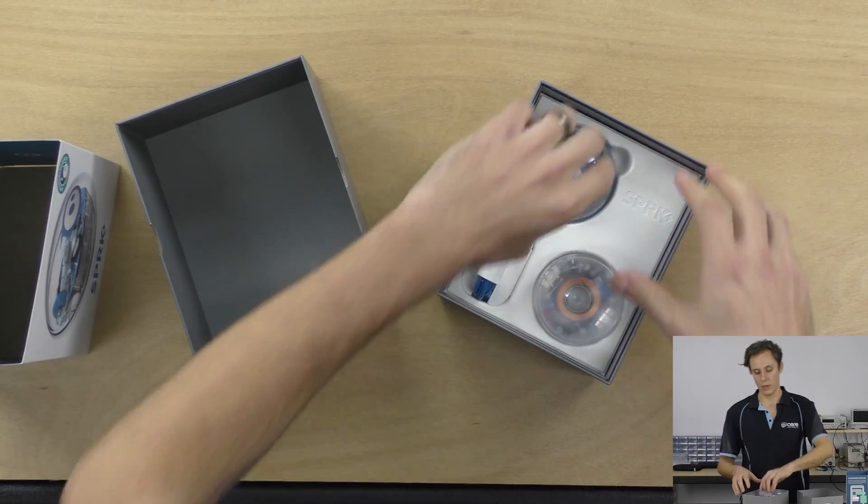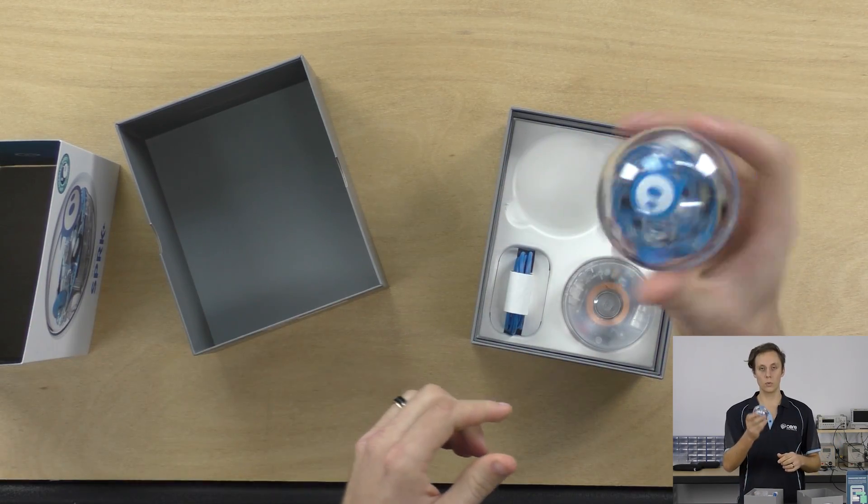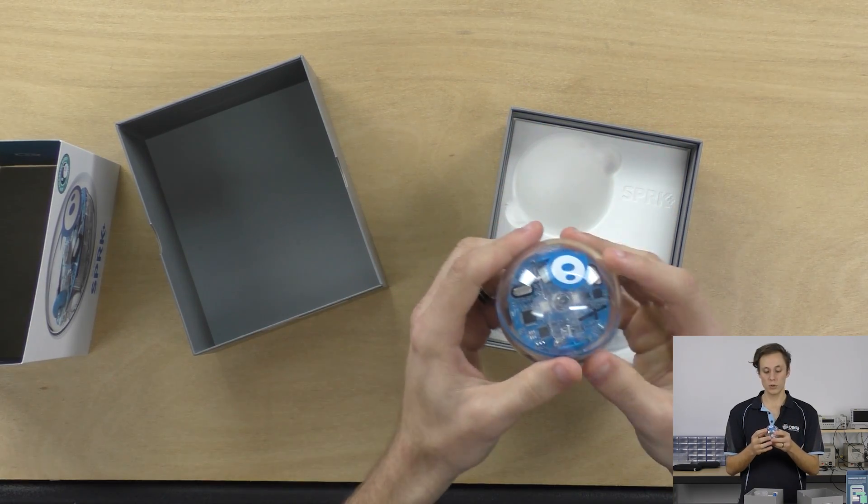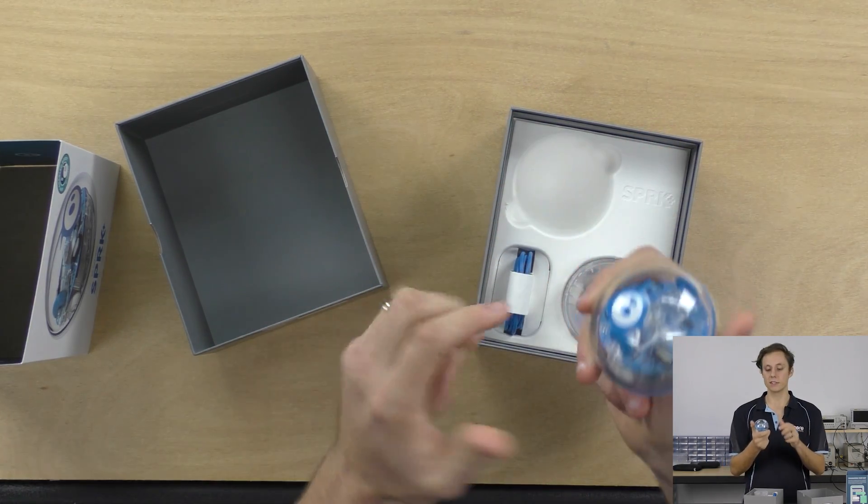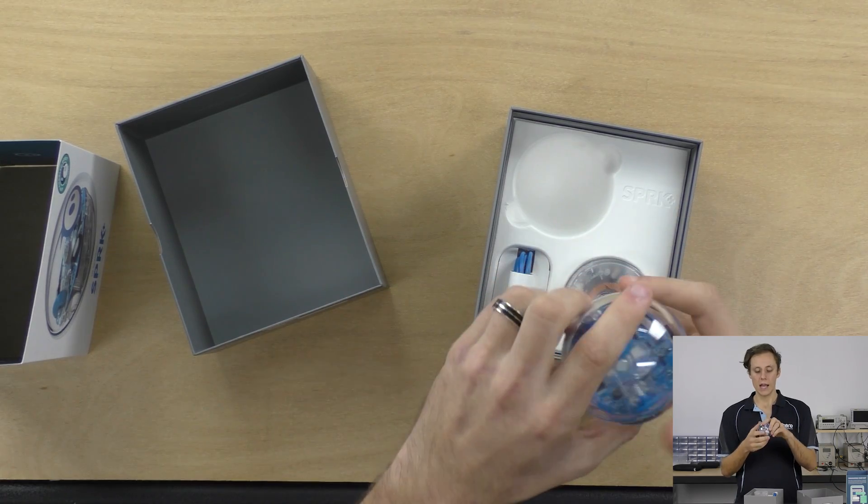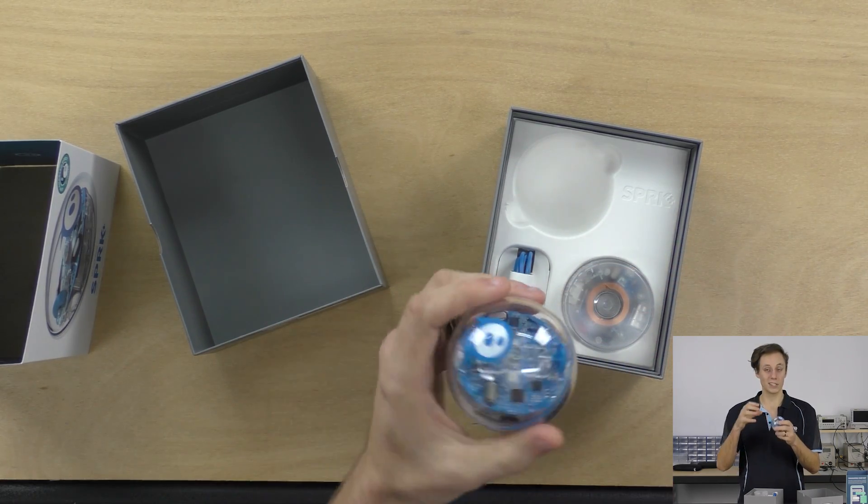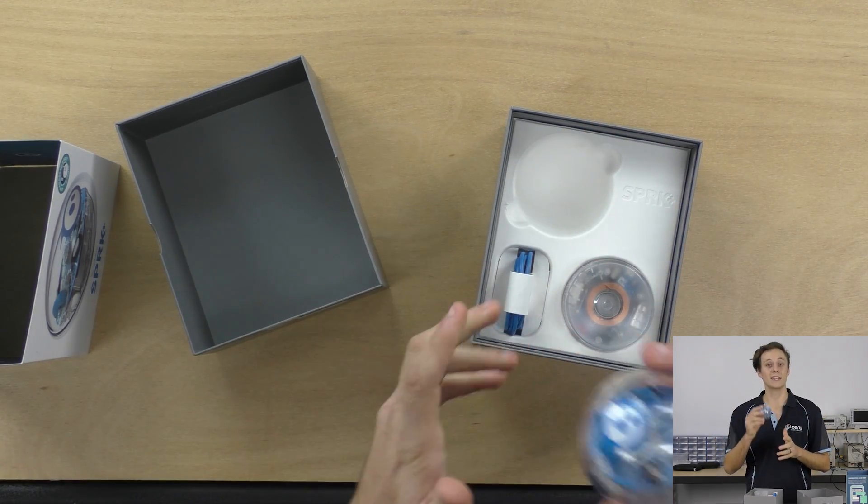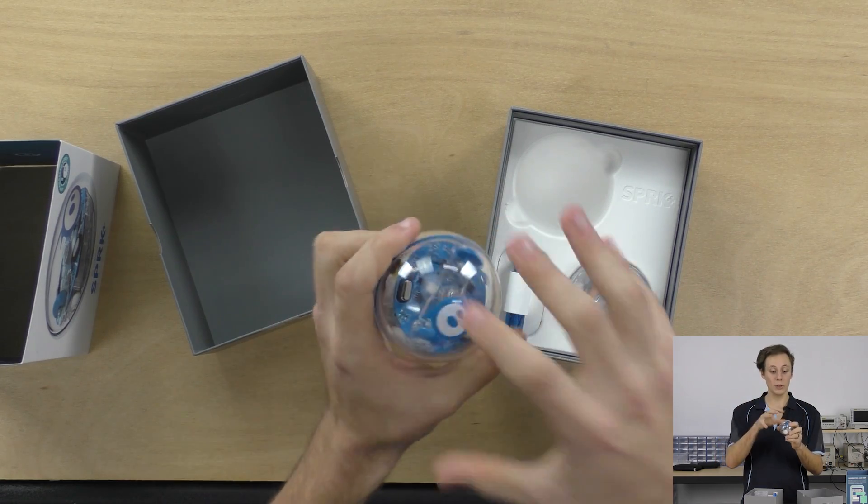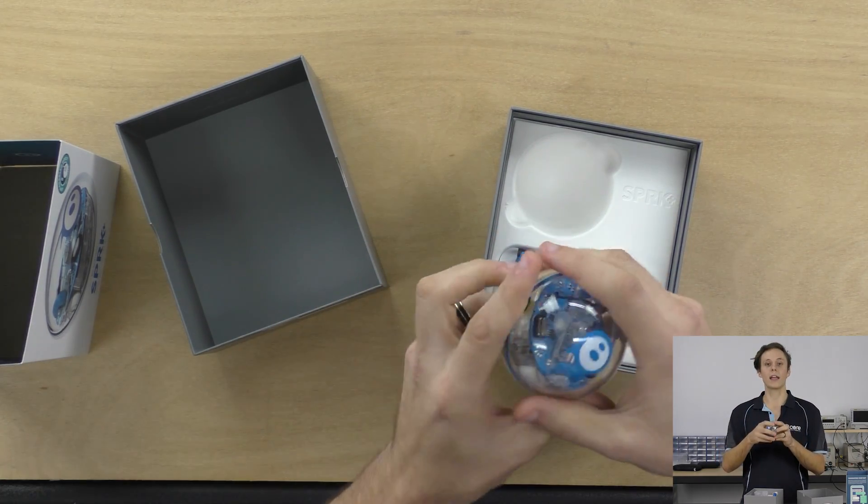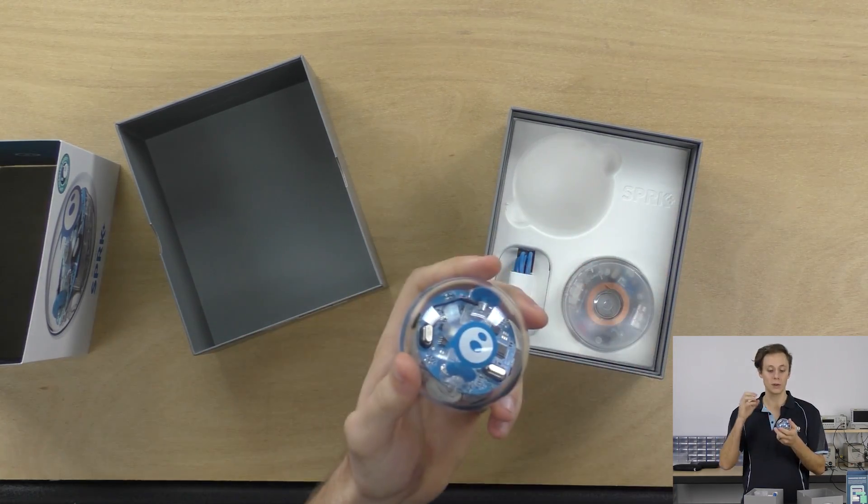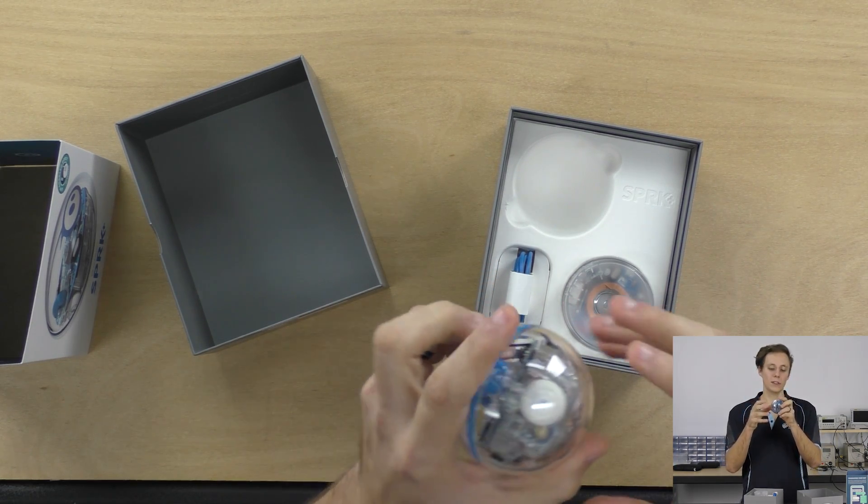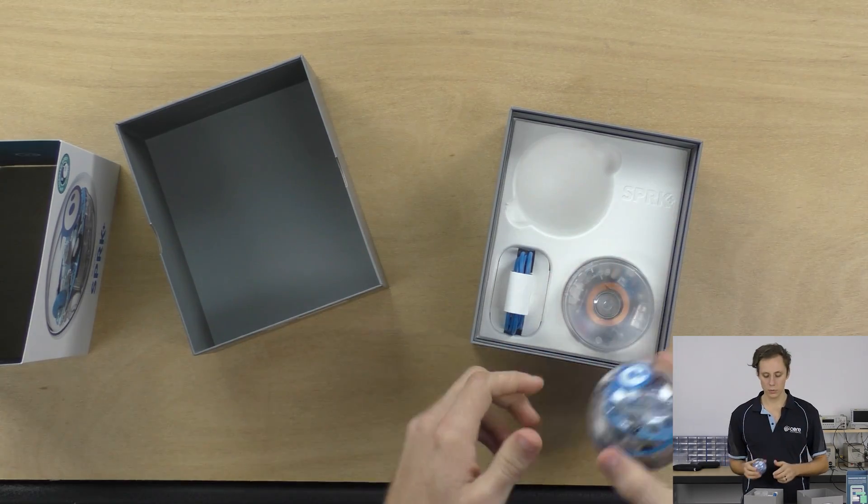Set that aside there. Then we've got the Sphero itself. Very cool tennis ball sized, obviously you can see how big it is there. Yeah, tennis ball is pretty good and it feels really nice. It's nice and heavy, it's got a good weight to it but not too heavy. And it just feels like a really well designed product. I love that it's transparent. I think that's really cool because if you're trying to encourage kids and young minds to take an interest in robotics and electronics and STEM learning and things like that, then they don't want to just be looking at a white case. They want to be looking at what's going on inside and you can see the circuit board and how the motors fit together. It's a really cool little package in there.